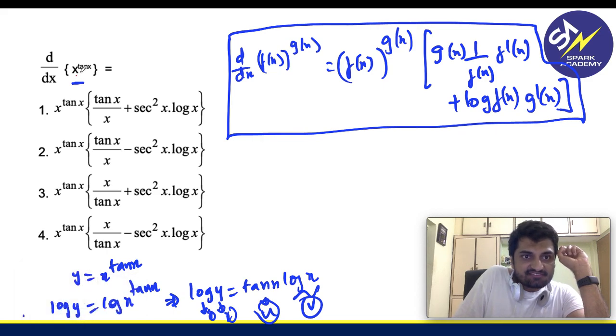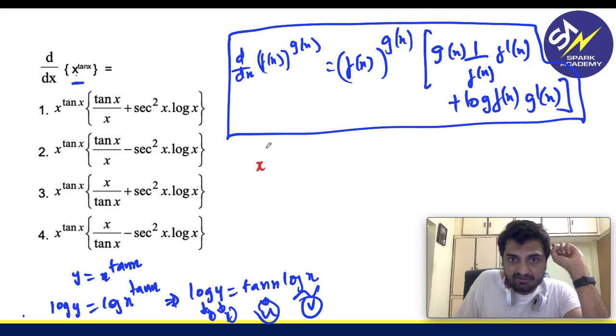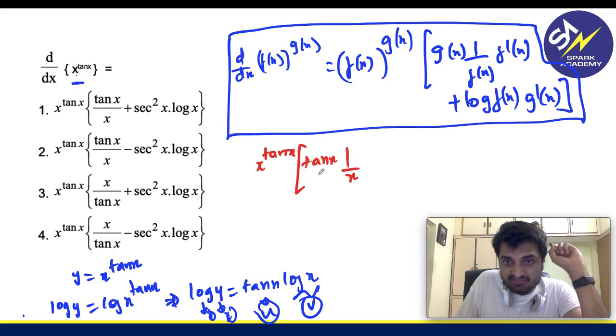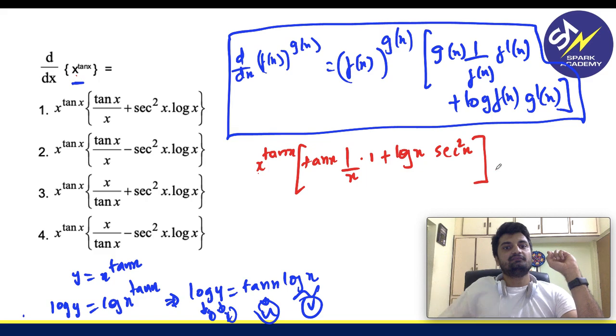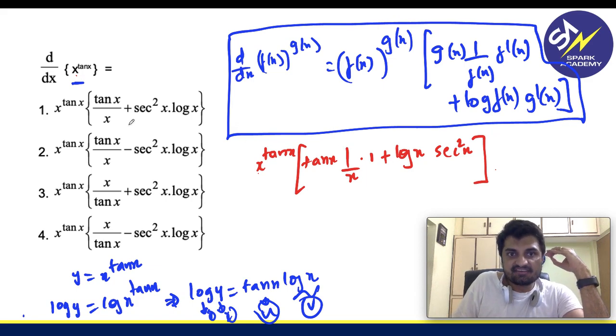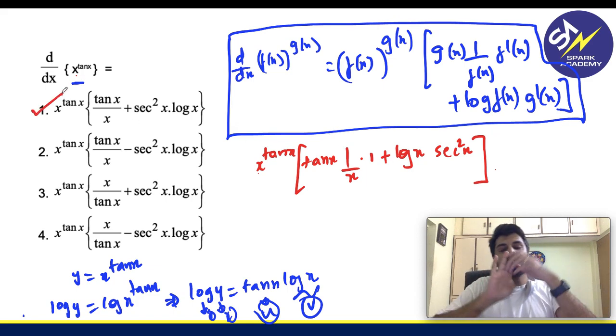Now let us see how this becomes a one step question. Now f of x is x, g of x is tan x. So let me use the same logic now. x power tan x as it is, power function is tan x, one by base is one by x, base derivative is derivative of x is one plus logarithm of base is log x, derivative of tan x is secant square x. That's it. So we are getting x power tan x, tan x by x plus secant square x log x.